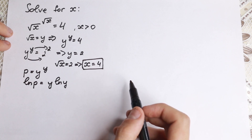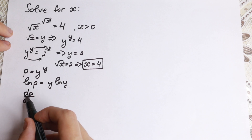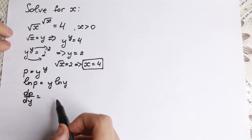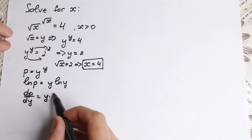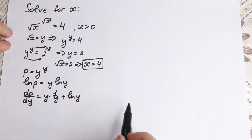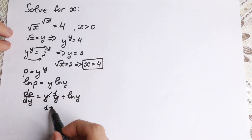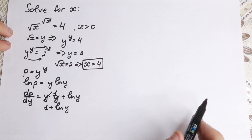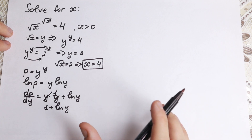Now let's find our derivative dp over dy. Looking at the right-hand side, we have a product. Using the product rule: y times 1 over y, plus natural log y. The y's cancel, and as a result we have 1 plus natural log y. Now let's set this derivative equal to 0 to find our critical points.